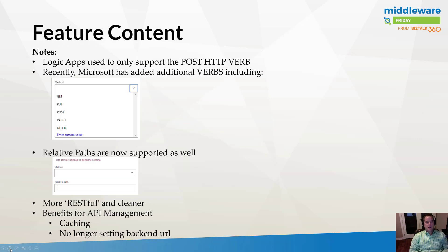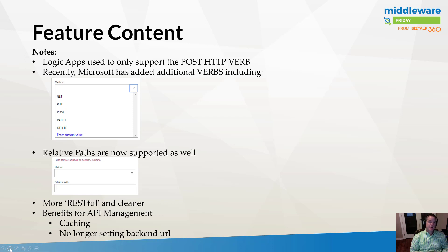Let's jump into the featured content. In the last Logic Apps Live episode, the team talked about some changes to the HTTP Connector. These changes are related to the additional HTTP verbs that are now supported and custom relative paths. Previously, I'm not sure if you would have picked up on this in some of the previous Middleware Friday episodes, where I used an HTTP Connector to expose an endpoint — I'm always using a POST in those scenarios. The reason is that I had to, because that was the only HTTP verb that was supported. That's now changed.